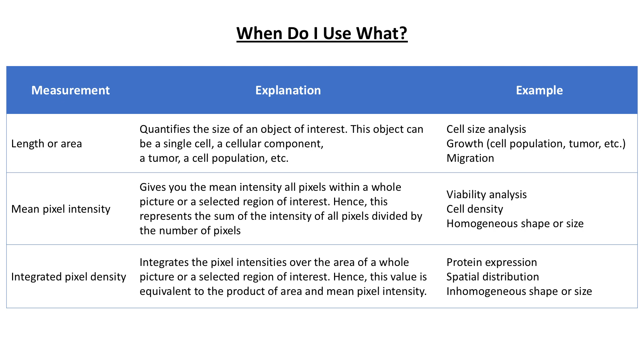This measurement comes in handy when the size and shape of ROIs are inhomogeneous. Hence, the integrated pixel density is used for example in protein expression analysis or spatial distribution of stained proteins or cellular structures.